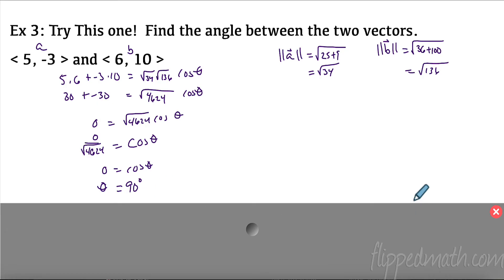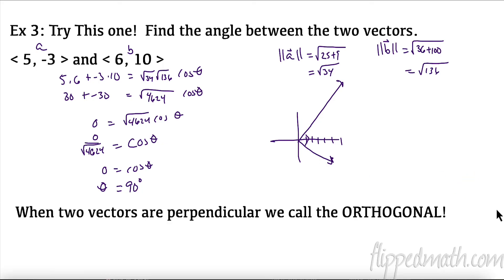So over here I found the magnitudes. I got the magnitude A was radical 34, and the magnitude B was radical 136. I plugged in my formulas on this. I noticed that on the left side, the easy side, I got 30 plus negative 30 or 0. Over here, when I multiplied my magnitudes together, remember when they're both under a square root you can multiply them together. So I got 4,624 square root of that. Divide, I got 0 equals cosine of theta. Well, I know that when cosine is 0, that's a 90 degree angle. Now, if you didn't remember that, shame on you. But if you didn't remember that, you could have put that in your calculator and you would have found that it was 90 degrees.